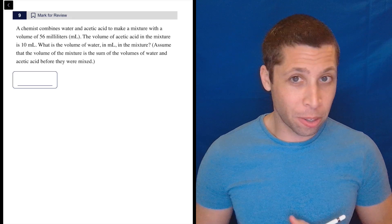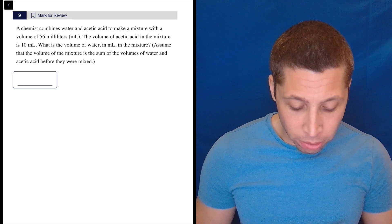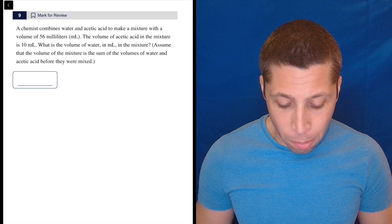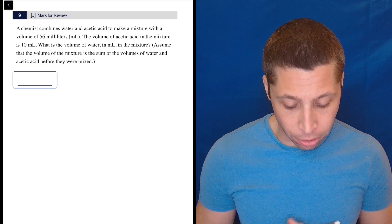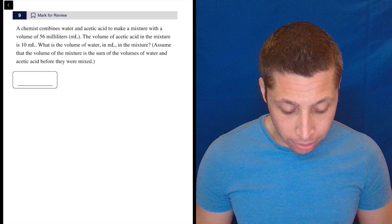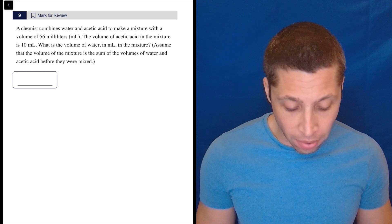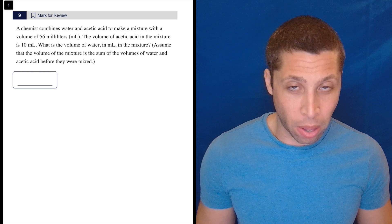It's a story question, but don't panic. Let's just see what it says. A chemist combines water and acetic acid to make a mixture with a volume of 56 milliliters. The volume of acetic acid in the mixture is 10 milliliters. What is the volume of water in milliliters in the mixture? Assume that the volume of the mixture is the sum of the volumes of water and acetic acid before they were mixed.